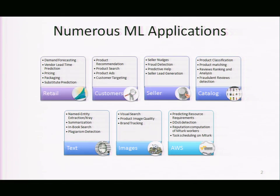On the retail side of our business, we use machine learning to forecast future product demand. These forecasts need to be fairly accurate — if you forecast demand too high, you're stuck with excess inventory that costs money to store; if you forecast demand too low, you're out of stock and that leads to unhappy customers.